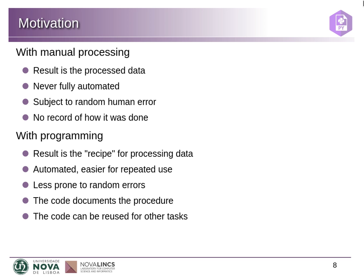If we automate things, what we produce is the recipe for processing data. The actual processing is what the computer does, and we can reuse the recipe whenever we want. This makes it easier for reusing and less prone to random errors. We can still have errors, but usually they will occur under the same conditions and in the same way, so we can test for those errors first and check if everything is working. Finally, the code you write can document the process you are following — if anyone has doubts about how the data was processed, all you need to do is open the script and look at the code. This is one of the reasons I chose Python: it's structured in a way that makes it easier for humans to read too, so it serves as documentation.